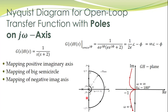Next comes the mapping of the negative imaginary axis. For the negative imaginary axis, the mapping is just the mirror image of the positive imaginary axis mapping. Now we are only left with the mapping of the small semicircle. We use the same procedure as for the bigger semicircle. This small semicircle can be represented by S = ε·e^(jφ), where epsilon approaches 0. Phi changes from minus π/2 to π/2.